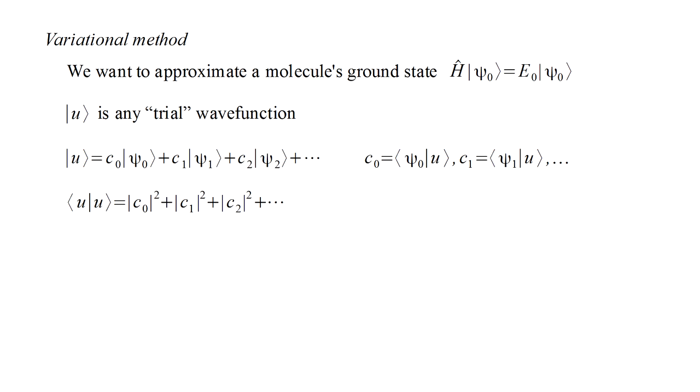The projection of U onto itself is the sum of the squared magnitudes of these constants. The projection of ĥU onto U is the sum with each term multiplied by the corresponding energy. If we replace E₁ by E₀, we reduce this value, unless C₁ is zero. If we replace E₂ by E₀, we reduce this value, unless C₂ is zero, and so on.